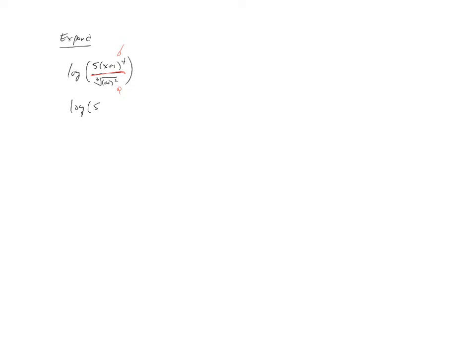So log of five times X plus one to the fourth minus log of the cube root of AB squared. Alright so now that I have two different logs both of which have different properties the first one I'll expand using the product rule.